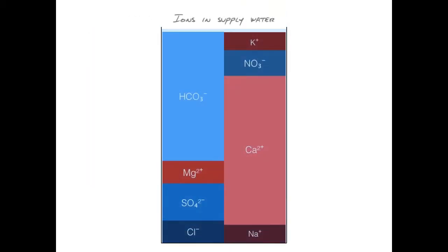Depending on where we are, we get different ionic mixtures from our water supply. The supply water often contains calcium, as in this example.